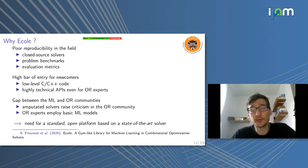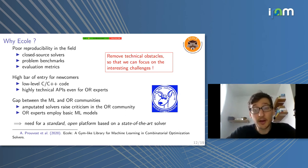And the other way around also, people in the OR communities who try to use machine learning tools, they tend to use simple tools just because they don't have access to complicated tools or it's hard enough to just interface with linear regression. So don't even think about big neural networks or reinforcement learning, it's out of reach. So there is a need for a standard open platform for machine learning for combinatorial optimization, which is based on a state-of-the-art solver.